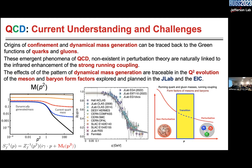We do continuum studies through Schwinger-Dyson equations and the study of these Green functions. The whole scheme works like this: you calculate your Green function, you start from a Lagrangian, you have only quarks and gluons, then you put them together, then you make mesons, and then you study whatever physical observable you have — like form factors, GPDs, or TMDs. Your basic building blocks that enter the calculations are the Green functions.